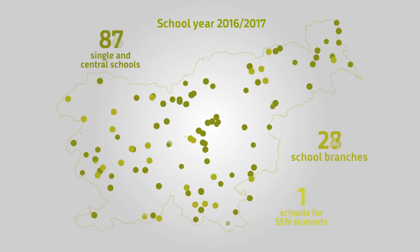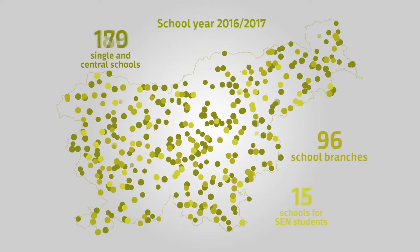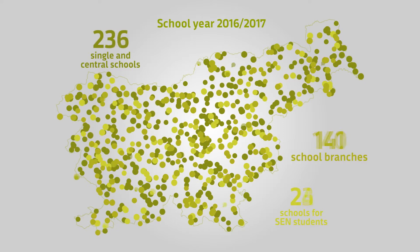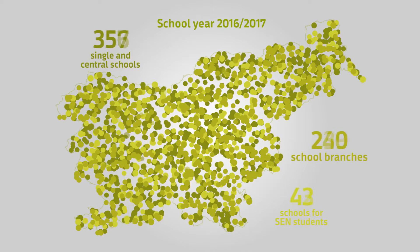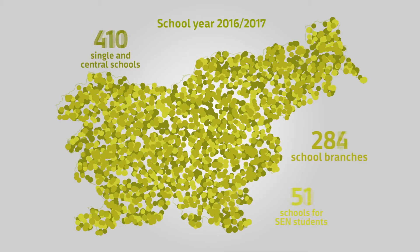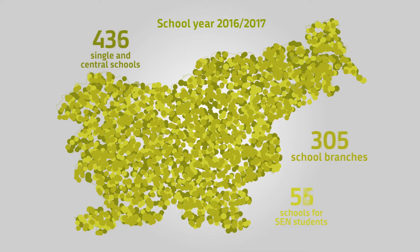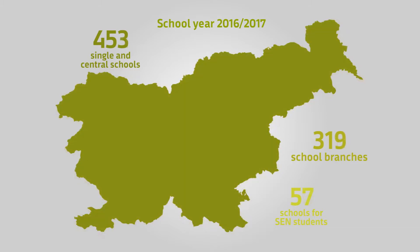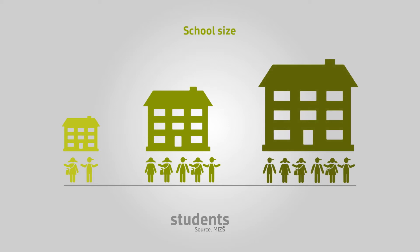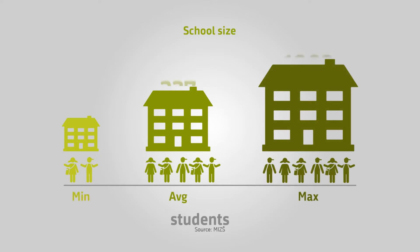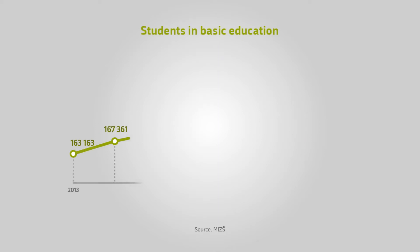The widespread network of public schools and their branches grants children access to a basic education. More than 750 basic schools, branches included, deliver the regular educational program, and almost 60 specialized basic schools, special units at mainstream schools, as well as specialized institutions for SEN students deliver the adapted educational program. Smaller school branches often also assume the role of community hubs.